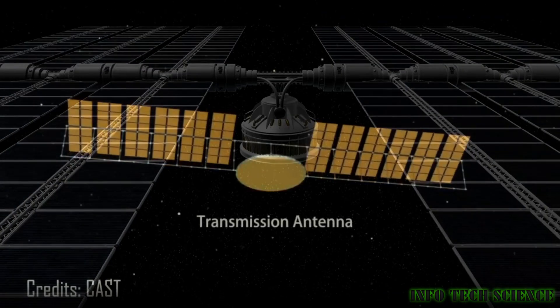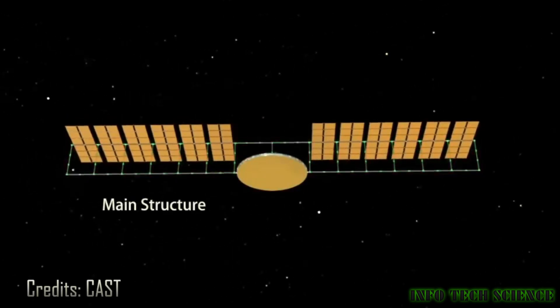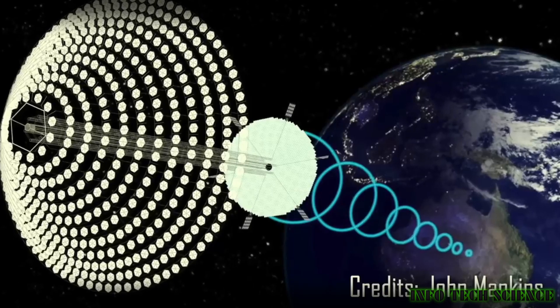Lasers and microwaves are currently the most promising technologies for wirelessly transmitting power over the long distance from a satellite in orbit to the surface of the Earth.